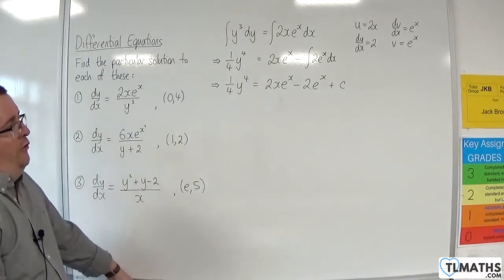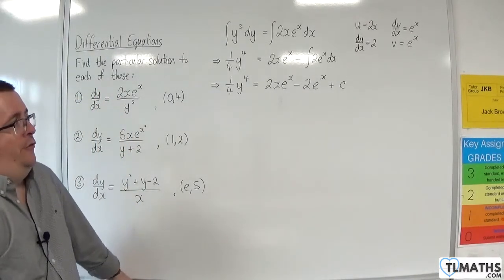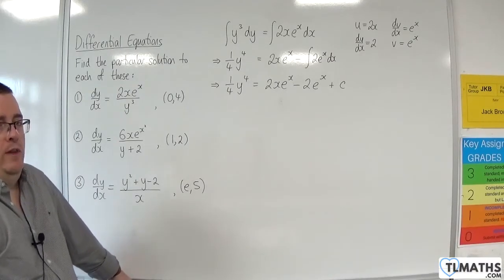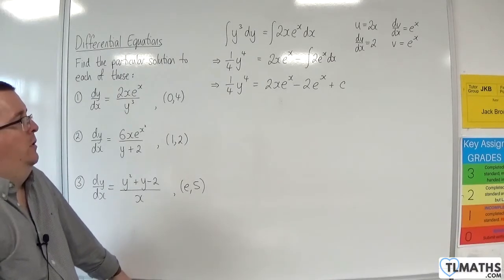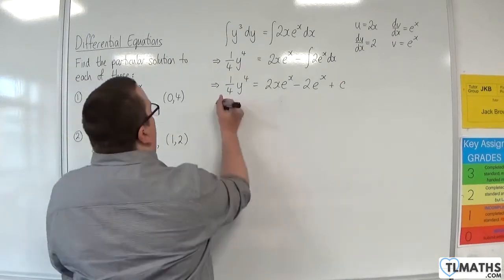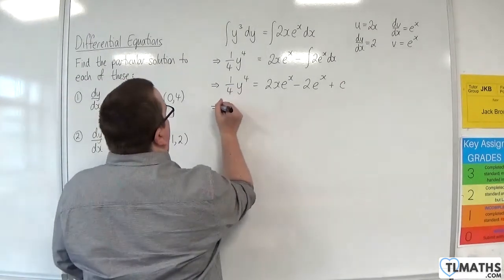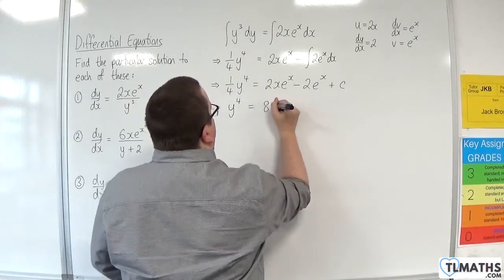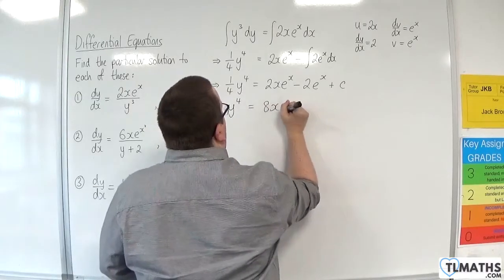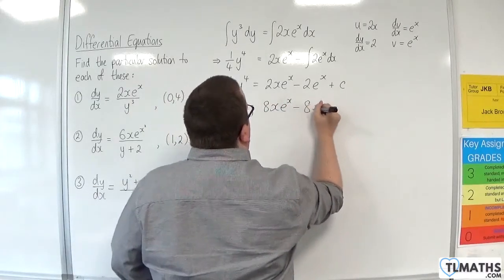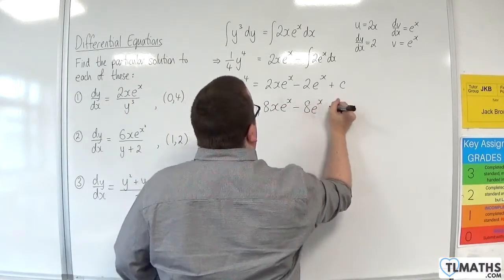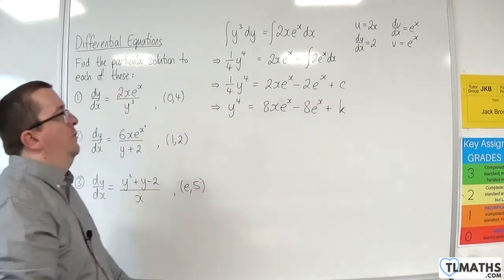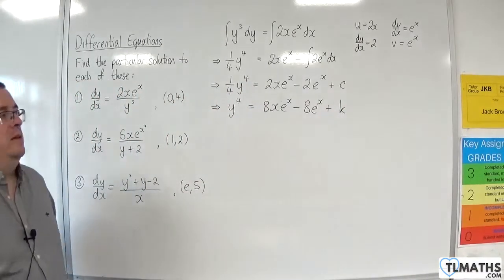Now, you can choose to work out the value of c now, or I would probably multiply all the way through by 4. So I'm going to do that first. I'll get y to the 4 is equal to 8x e to the x, take away 8e to the x, plus — let's now call this k. So 4 lots of c can be k.